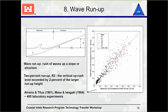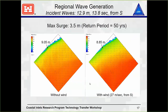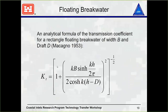Wave run-up: some information about how it's calculated, how we work with it, and some comparisons with actual data. Essentially, without run-up, all the waves would stop right at the shoreline. But as we apply these waves to our actual flow grid, the energy will cause the waves to actually go on shore a little bit farther distance.